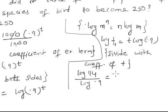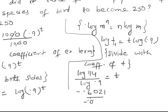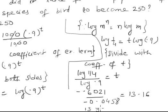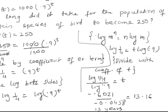This equals negative 0.6021 over log(0.9), and that value is divided by negative 0.0458, which comes out to be 13.16. So after approximately 13 years, the population becomes 250.